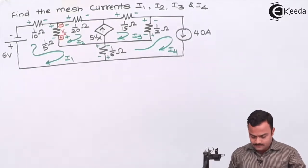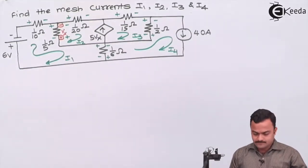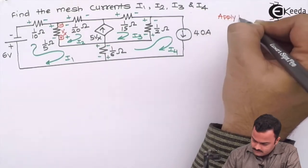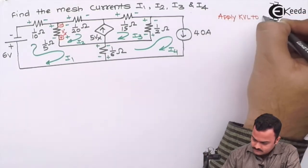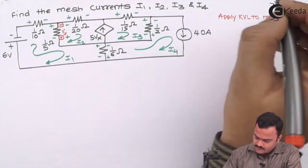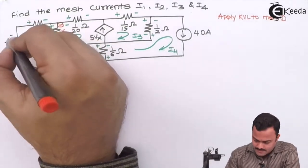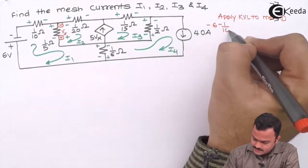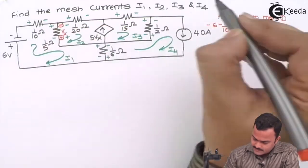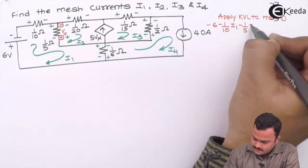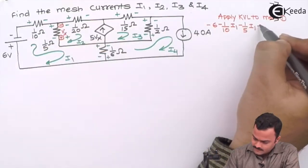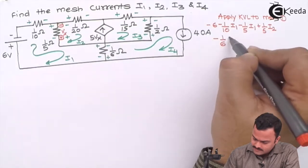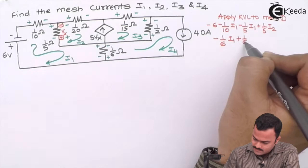All the resistors got voltage drops along with the polarities. Let's apply KVL to mesh one. We'll start with this voltage. It's minus 6 plus minus, minus 1/10 i1, plus minus, minus 1/5 i1, minus plus, plus 1/5 i2, plus minus, minus 1/6 i1 plus 1/6 i4 equal to zero.